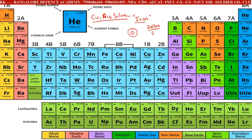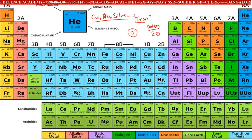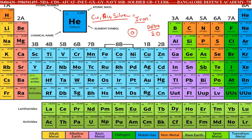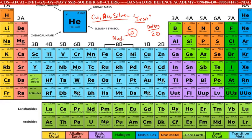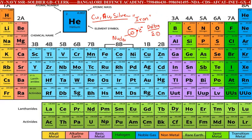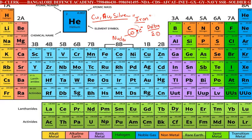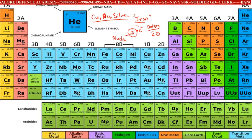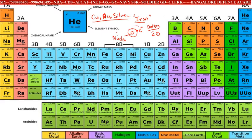Dalton gave a theory with five postulates. The first postulate states that the atom is the smallest particle of an element. The atom consists of a nucleus at the center, and electrons revolve around this nucleus. Scientists came up with a new scientific method to understand the structure of the atom.